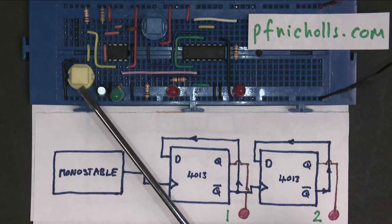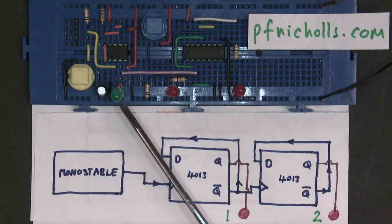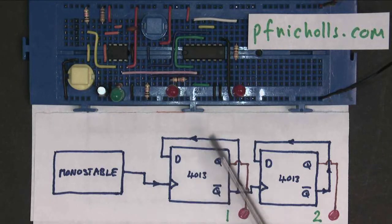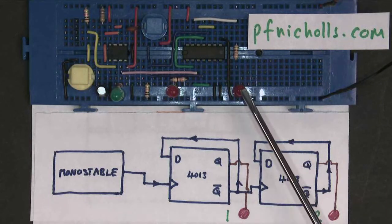I've got a monostable based on a 555 which produces about a one second pulse, a reset button. My first D-type flip-flop is this one here and this LED. My second D-type flip-flop is the top edge here and this LED.